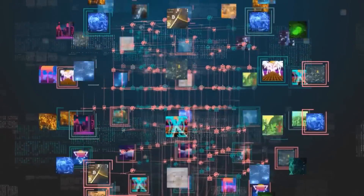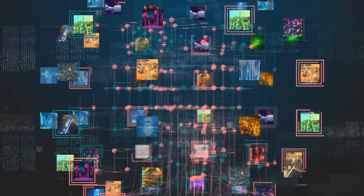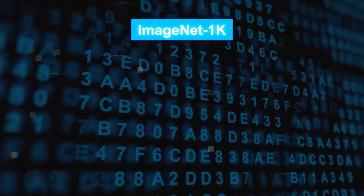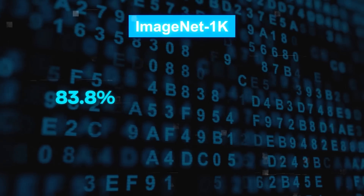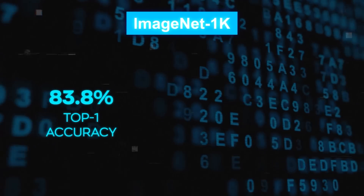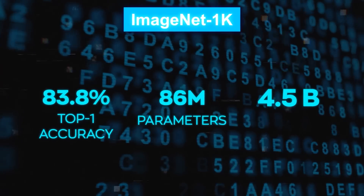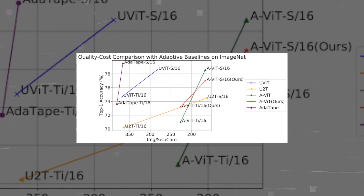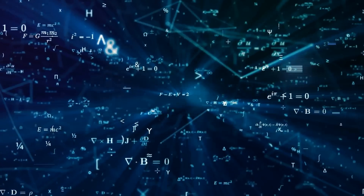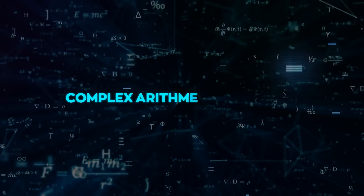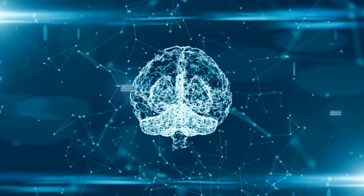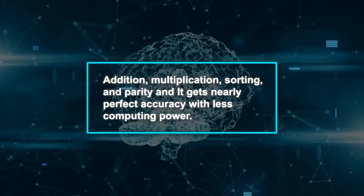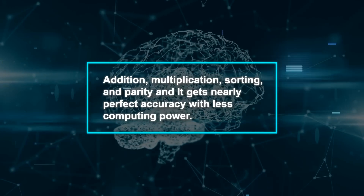For image classification, AdaTape is especially good — it can get high accuracy with less computing power. On the ImageNet 1K dataset, a large collection of images for classification, it gets 83.8% top-1 accuracy with only 86M parameters and 4.5B FLOPs. That's better and more efficient than other models like ViT and DiT. AdaTape also works well for algorithmic tasks like complex arithmetic problems. It outperforms other models on tasks like addition, multiplication, sorting, and parity, achieving nearly perfect accuracy with less computing power.